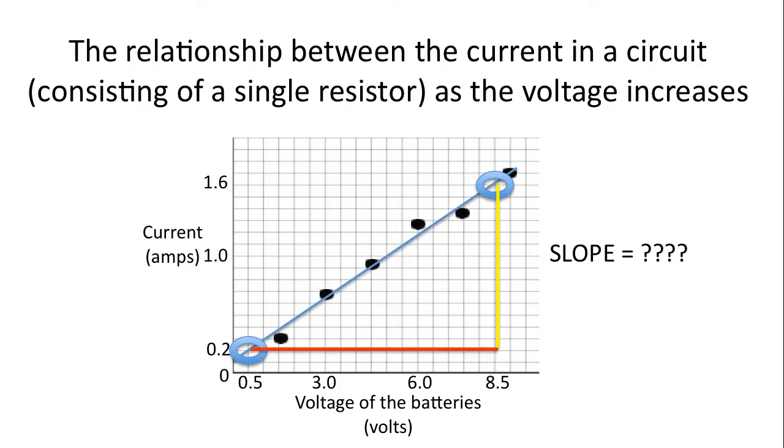Next, we draw our rise and run. I prefer to see two different colors used to represent the rise and the run. You don't need to circle the points as I just did. In fact, you don't have to do that at all.